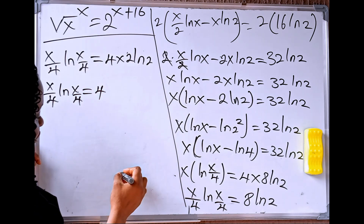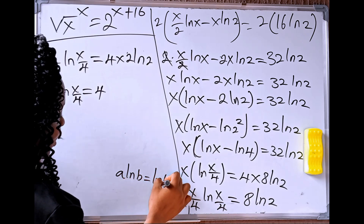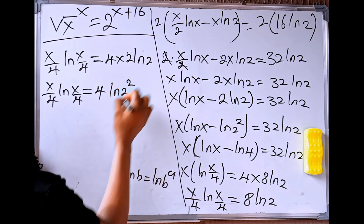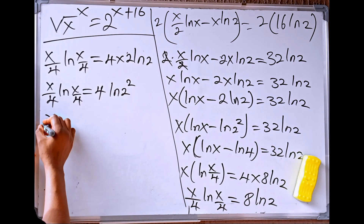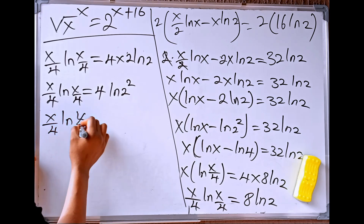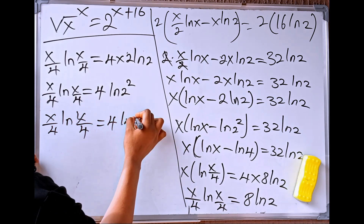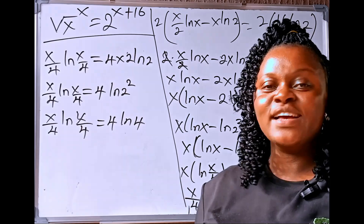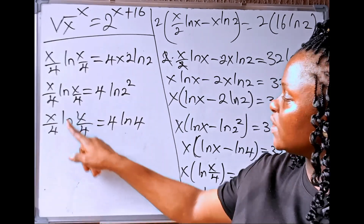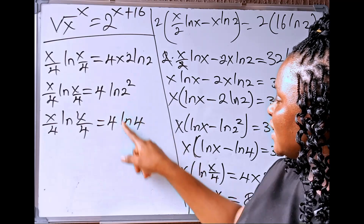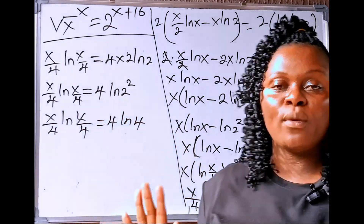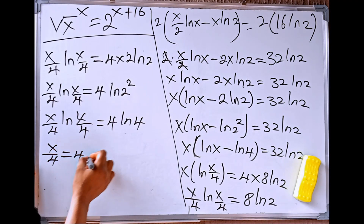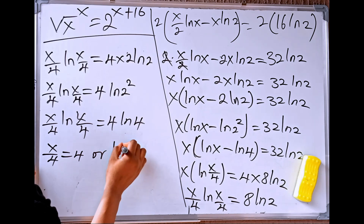From here, we are going to have x divided by 4 times ln of x divided by 4 equals 4 ln of 4. Remember that if we have a ln of b, this equals ln of b to the power of a. So 2 ln of 2 becomes ln of 2 squared, which is ln of 4. Now we can compare, because this one contains natural logarithm and this one also contains natural logarithm, while the other part is all numbers. So, comparing: x divided by 4 equals 4, or ln of x divided by 4 equals ln of 4.